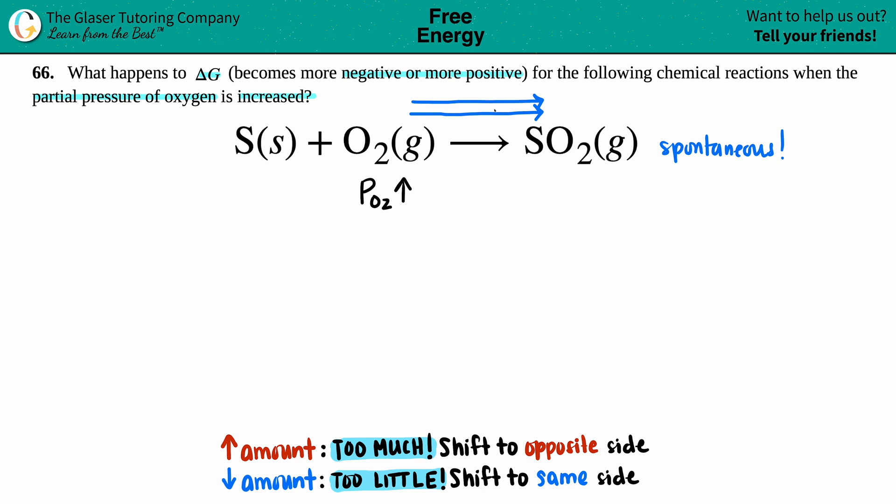Now we just have to link if spontaneous is a negative or a positive delta G. And by definition, if you have a spontaneous reaction, which is what we have here, we're going to the products. We know that the delta G is going to be a negative value. Anytime that you have a delta G that's negative, that always means that you have a spontaneous reaction in which you will produce more products.